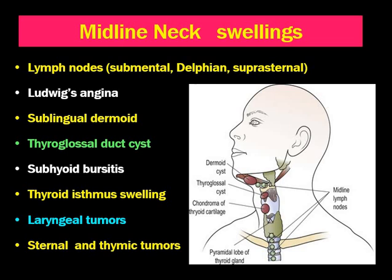Next is thyroglossal duct cyst, which is a very commonly asked question in the final university examination. The typical picture is a midline neck swelling from the submentum to the thyroid cartilage — a cystic swelling which moves on deglutition and protrusion of the tongue. It is attached to the hyoid bone and tongue base. Therefore, any midline swelling that moves on protrusion of the tongue and swallowing is suspected to be a thyroglossal duct cyst, which is a common congenital lesion presenting in young adulthood.